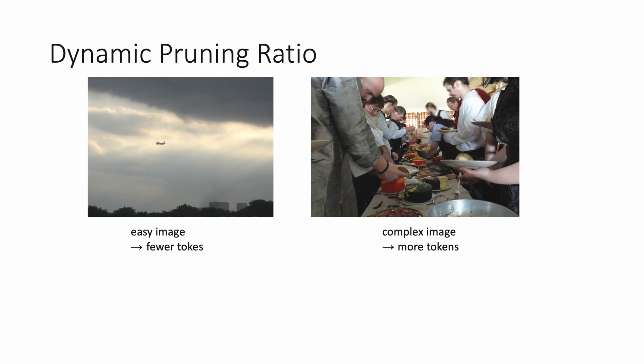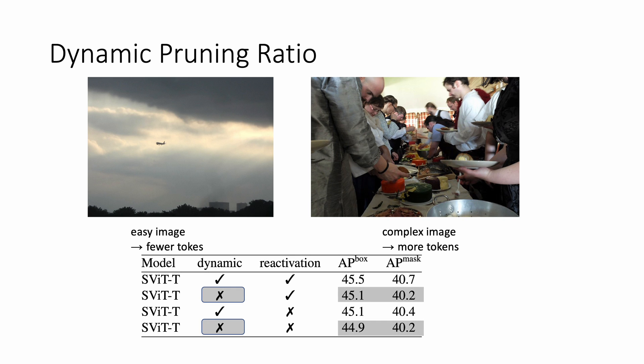We also add a dynamic pruning ratio to adapt to images of different complexities. The intuition is that simpler images require fewer tokens and complex images require more tokens. Our experiments demonstrate that dynamic ratio can help allocate computation resources reasonably and improve overall performance, especially when combined with reactivation.